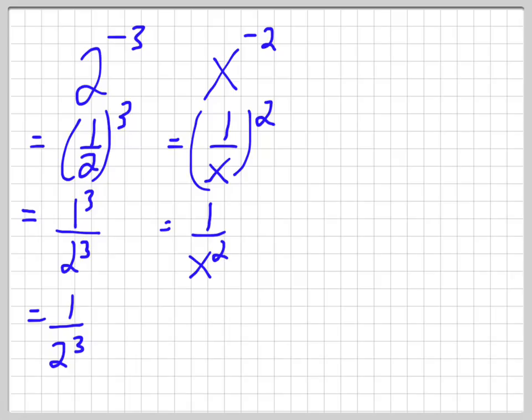Now you might have something like this. 1 over 2 to the negative 2. So again we flip the base. So this becomes 1 over 2 flipped over. The reciprocal of the base is 2 over 1. So I'll just write 2. And the exponent becomes positive. 2 to the 2, which is 4.